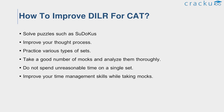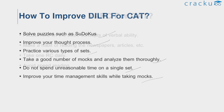Let us see how to improve your score in each section for CAT. For the DILR section, try to solve puzzles such as Sudokus in your free time to improve logical thinking skills. Improve your thought process and practice various types of sets. Take a good number of mocks and analyze them thoroughly. Do not spend unreasonable time on a single set — this is a very important point to be considered while taking the exam. Finally, improve your time management skills while taking mocks.